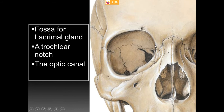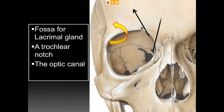The trochlear notch holds a tendon for the superior oblique muscle. Here you can see the fossa for the lacrimal gland, and medially the trochlear notch.